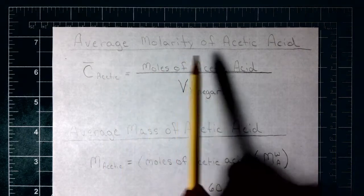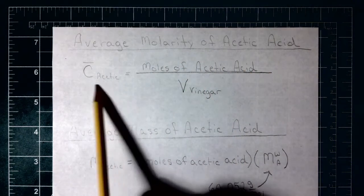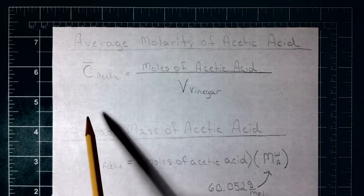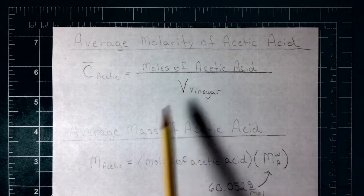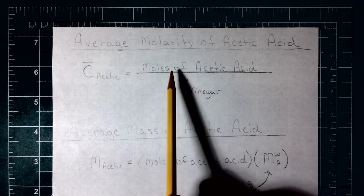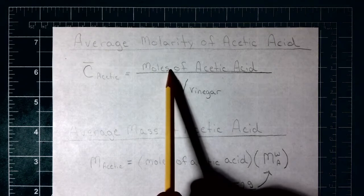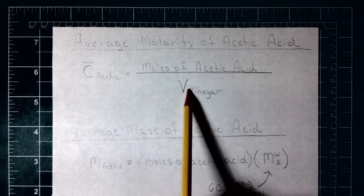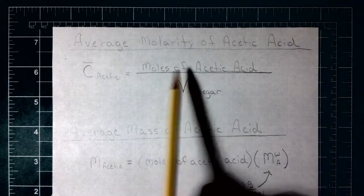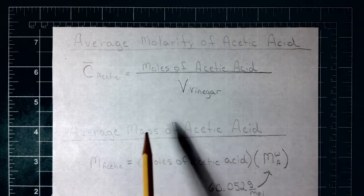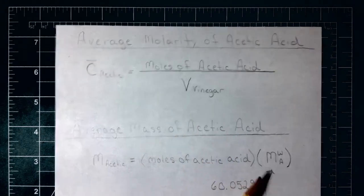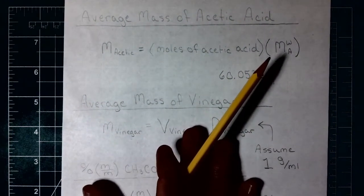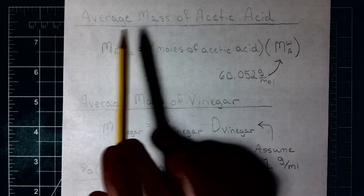Next we're going to calculate the average molarity of the acetic acid — the concentration in units of molarity, which is moles per liter. We take the moles of acetic acid we just calculated and divide by the volume of vinegar that we added, making sure to convert that volume to liters.